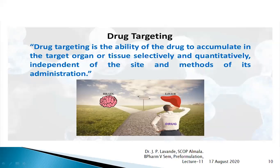Selectively, the drug should go and accumulate only into the brain if action is required there, or into the liver if action is required there, and not elsewhere. Quantitatively, a large quantity of the drug should accumulate in the targeted organ, independent of the site and method of administration — whether oral, parenteral, topical, or any other route. The drug should selectively and quantitatively accumulate into the target organ or tissue. That is called drug targeting.